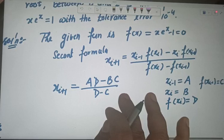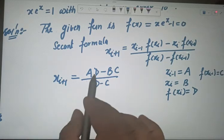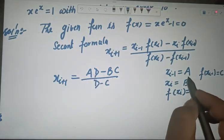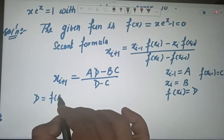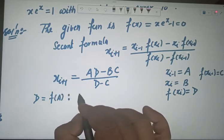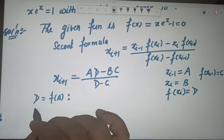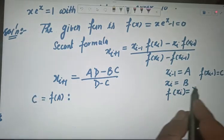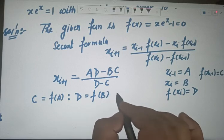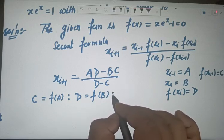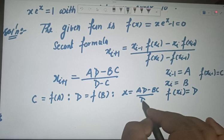For programming into the calculator, you need to define 'c' first — c = f(a) — and then define 'd' — d = f(b). Then compute x = (a·d − b·c) / (d − c). That will be your calculator program.